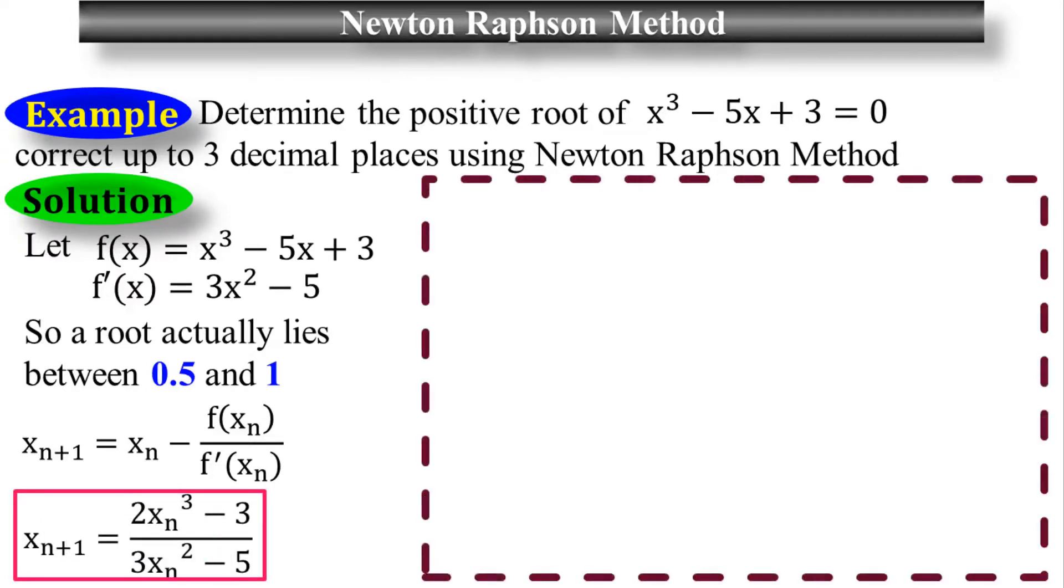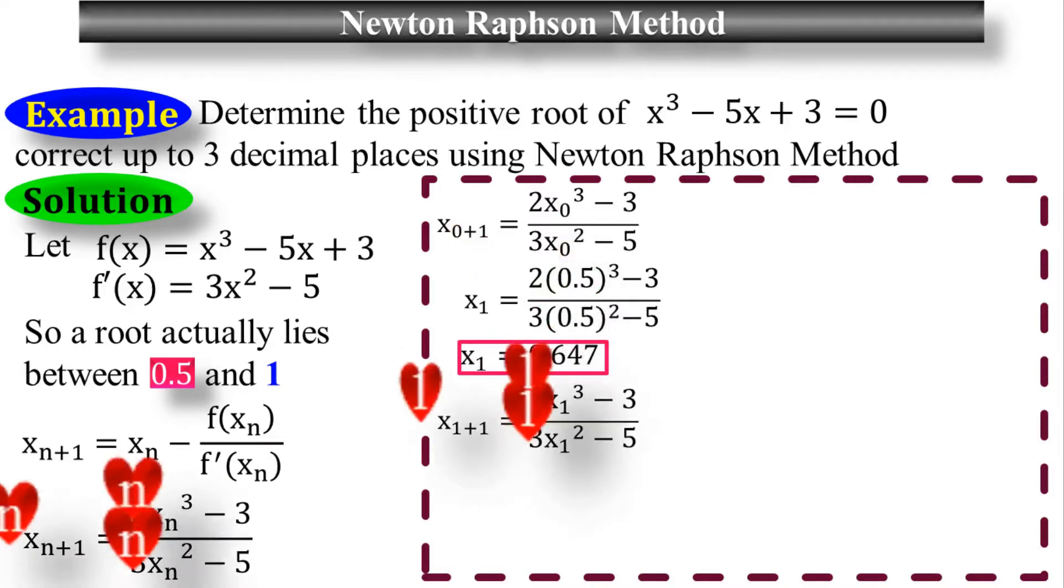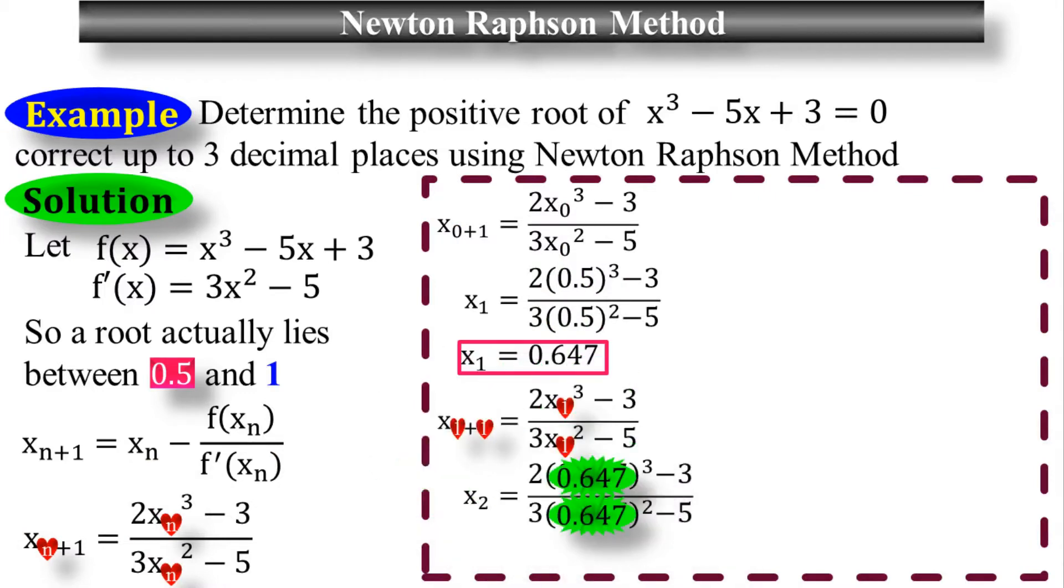Now I am going to do the iteration process. Take the equation and substitute the initial value 0.5. This is my x sub n, the approximate value of the first iteration process. Repeat the process and substitute the value of x sub 1, which is 0.647. This is my x sub 2, the second approximate value.